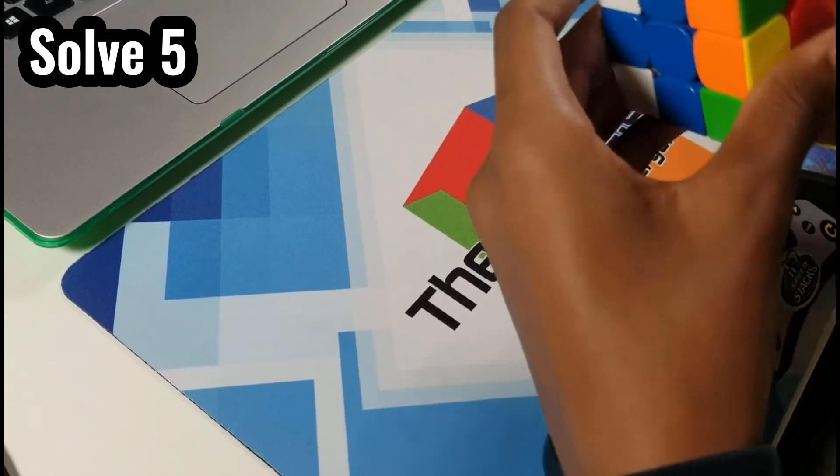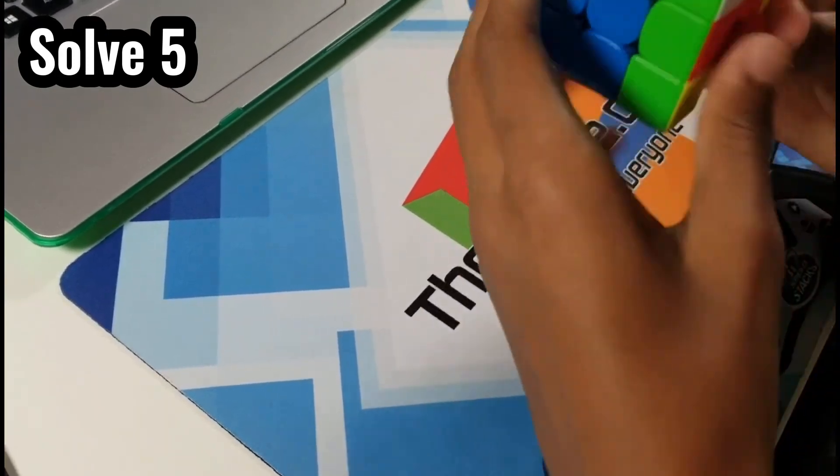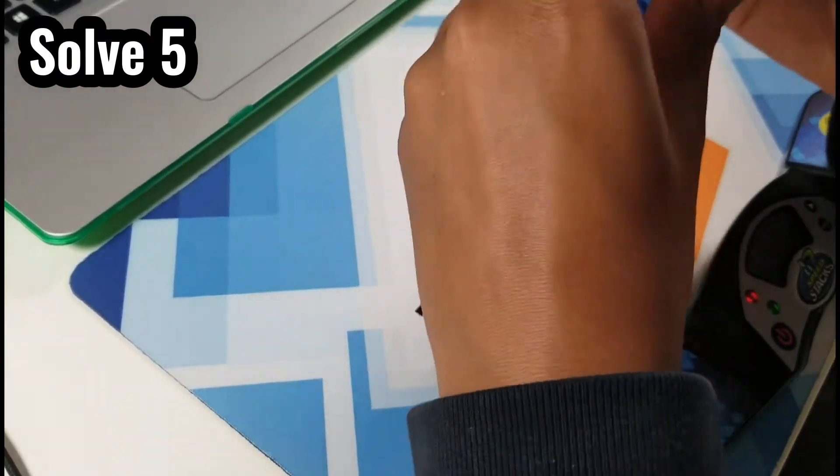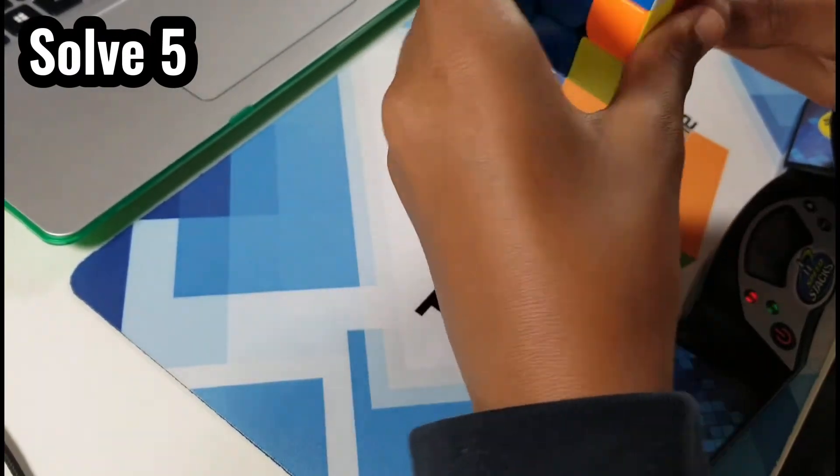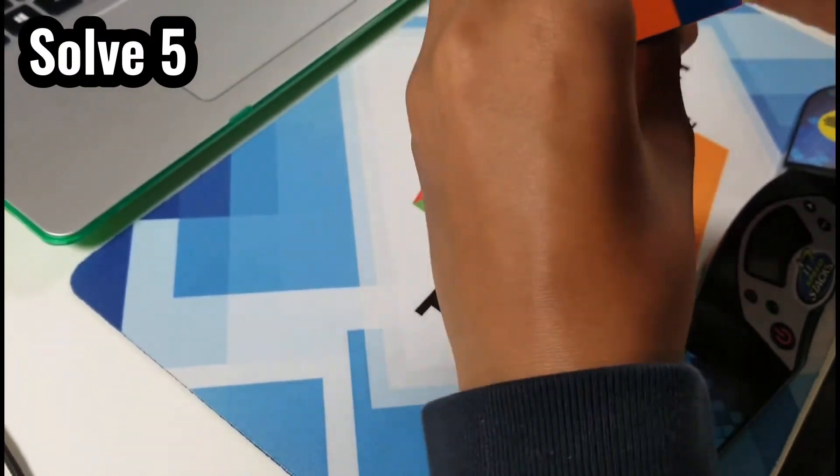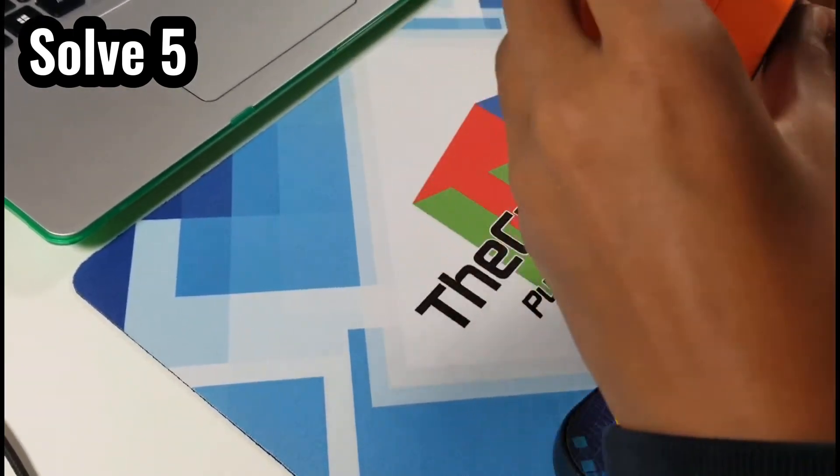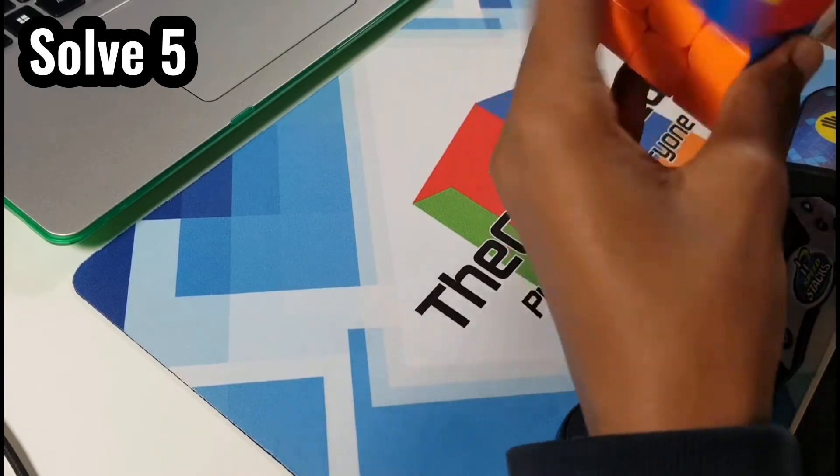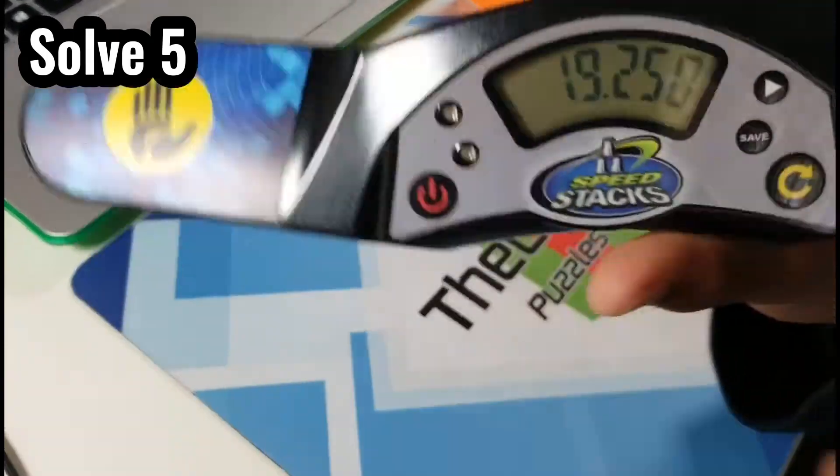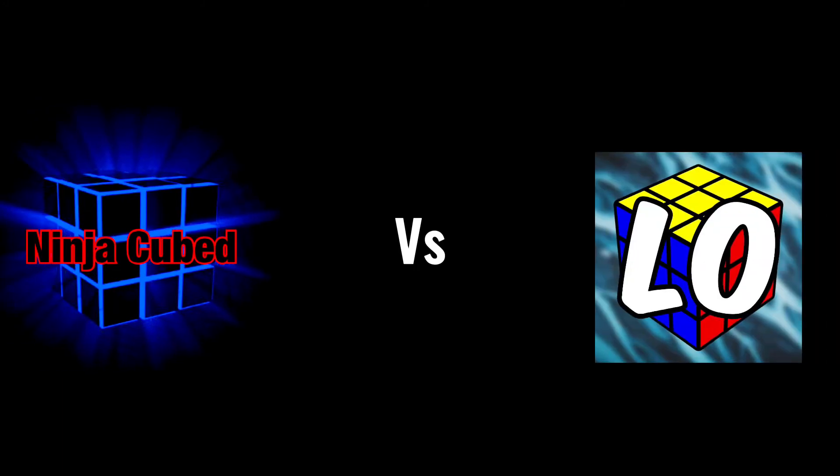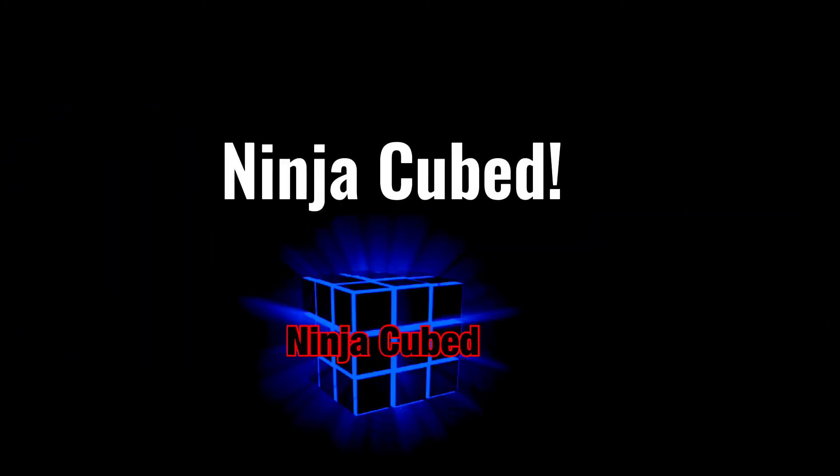Okay, so the low down on cubing starts his fifth and final solve. Doing a pretty nice cross, actually. Already on to F2L. His cross to F2L transitions are really good. Already almost done with F2L. And now on to OLL, doing two look, like usual. And now on to PLL, and it looks like he has another J perm for a total of 19.250. And the winner of the fifth round is Ninja Cubed.